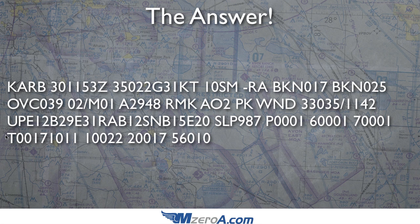The T group gives you your exact temperature and dew point. The zero means the number is positive. Skip ahead to add a decimal point: positive 1.7 degrees Celsius. That makes sense because up above we said 2 degrees Celsius — since it's 0.5 or above, they simply round up and call it 2 degrees; in reality it's 1.7. For the exact dew point, the one means the number is negative. Split the difference: negative 1.1 degrees Celsius is our dew point, which completely matches what we have above.